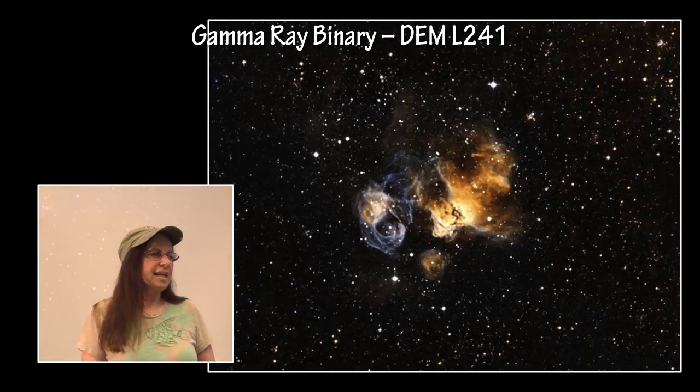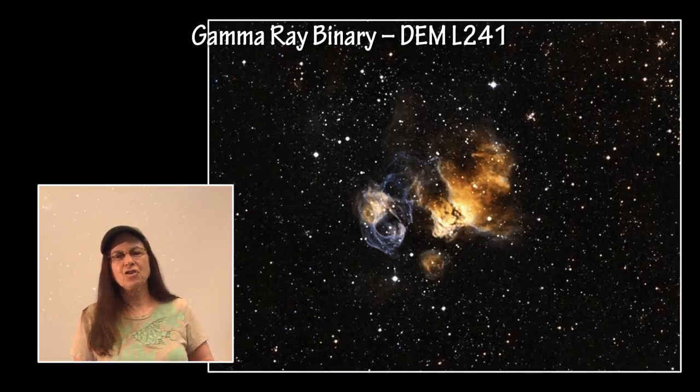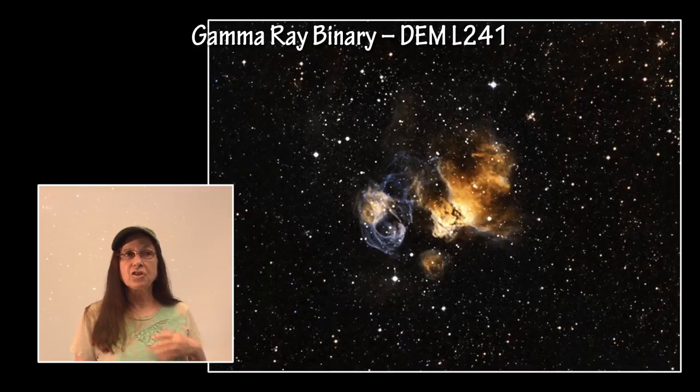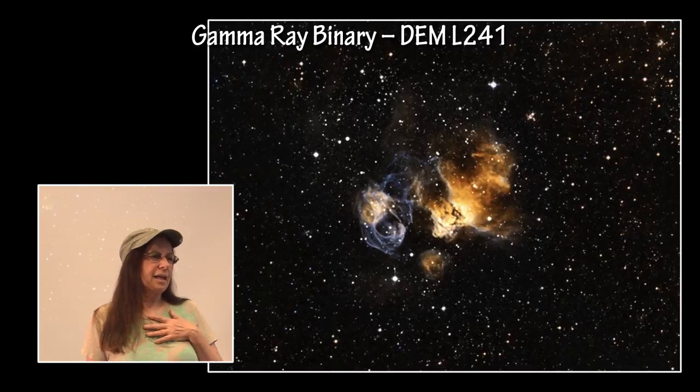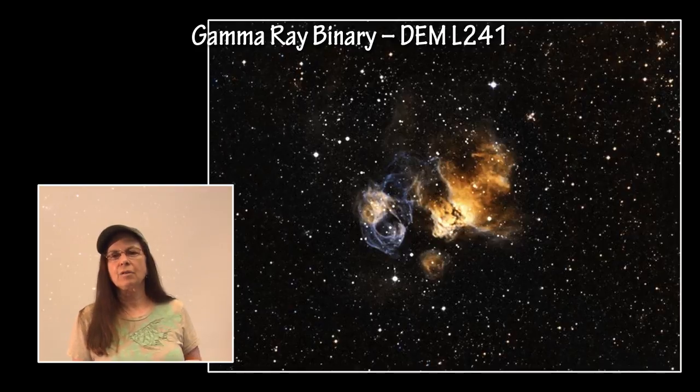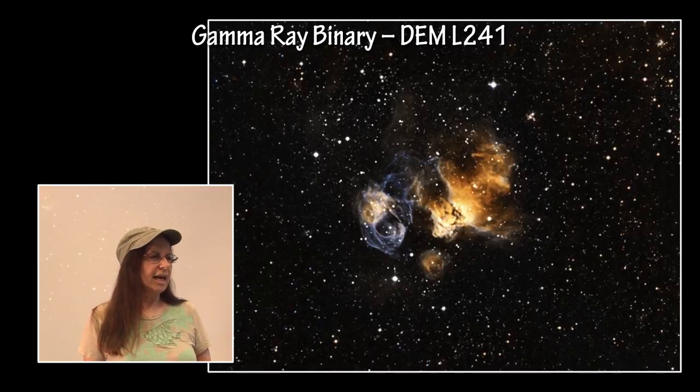The gamma-ray binary DEM L241, in this particular image, is an optical image which is the white from the digitized sky survey, and the yellow and cyan is from the Magellanic Cloud emission line survey in Chile.